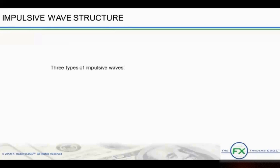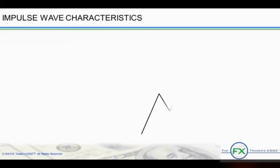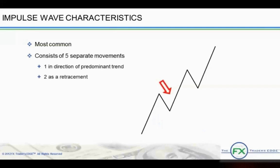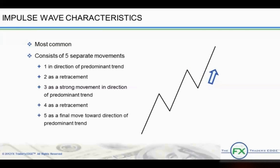There are three types of impulsive waves: impulse, the leading diagonal, and the ending diagonal. Impulses are the fundamental element of Elliott Wave patterns and the most common of the impulsive wave structures. Impulses consist of five separate movements: Wave 1 in the direction of the predominant trend, Wave 2 as a retracement, Wave 3 as a strong movement in the direction of the predominant trend, Wave 4 as a retracement, and Wave 5 as a final move toward the direction of the predominant trend.